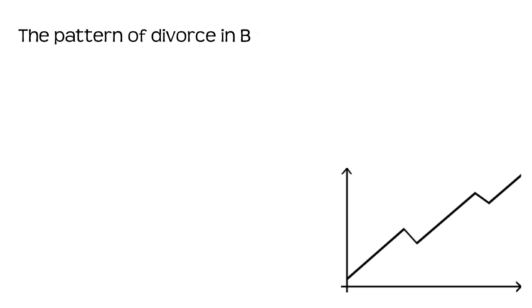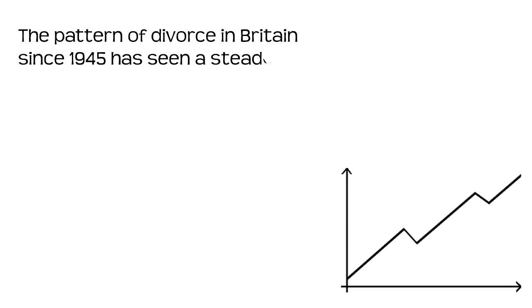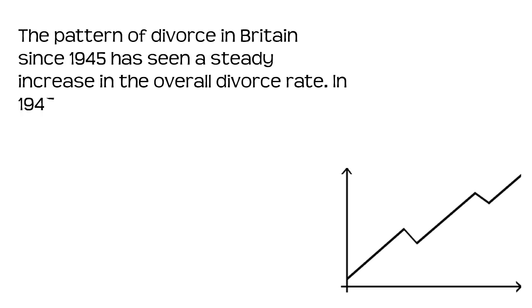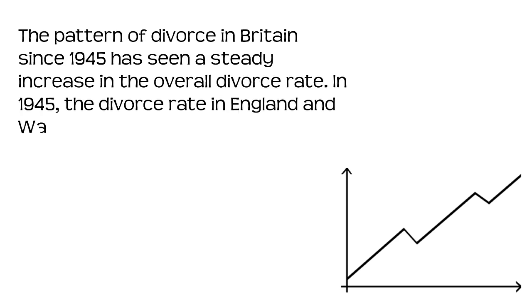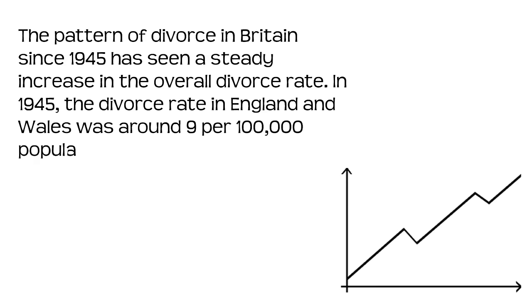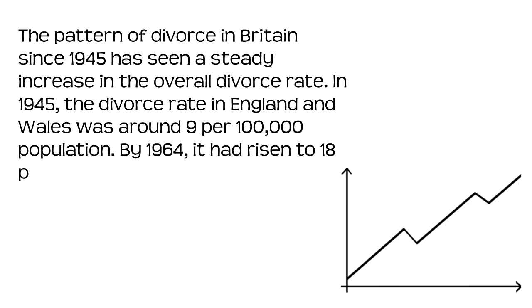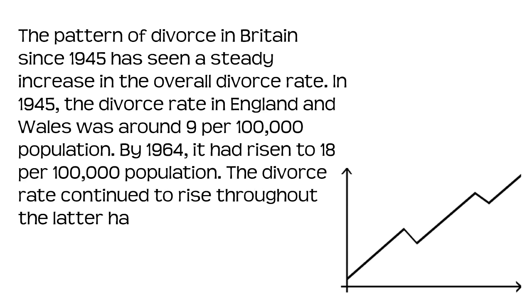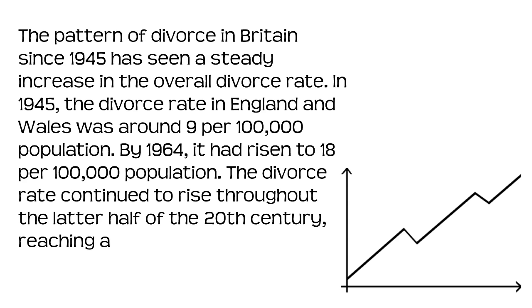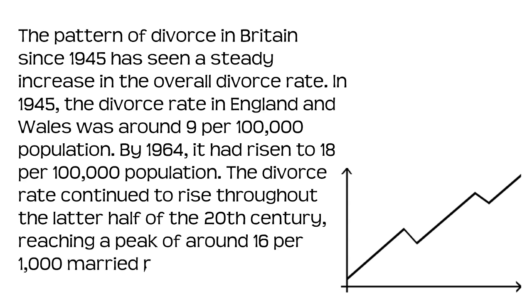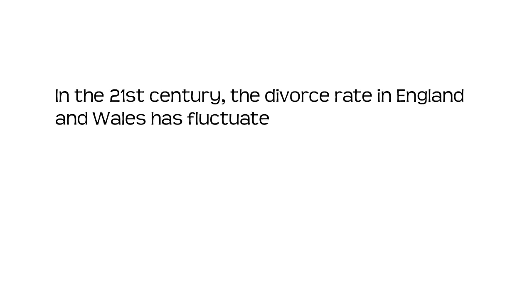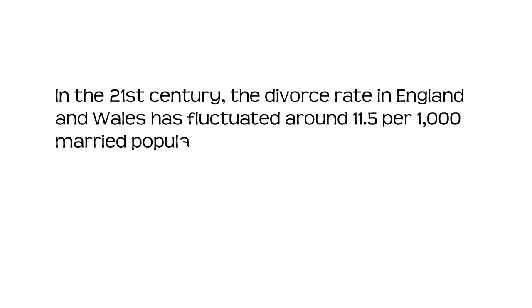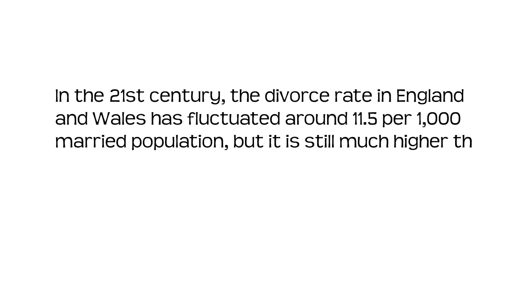The pattern of divorce in Britain since 1945 has seen a steady increase in the overall divorce rate. In 1945, the divorce rate in England and Wales was around 9 per 100,000 population. By 1964, it had risen to 18 per 100,000 population. The divorce rate continued to rise throughout the latter half of the 20th century, reaching a peak of about 16 per 1,000 married population in 1993.